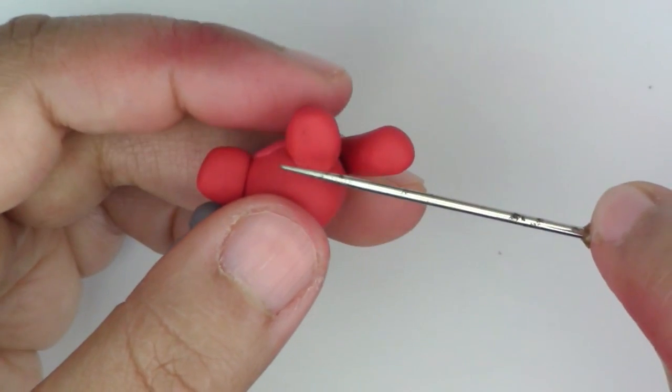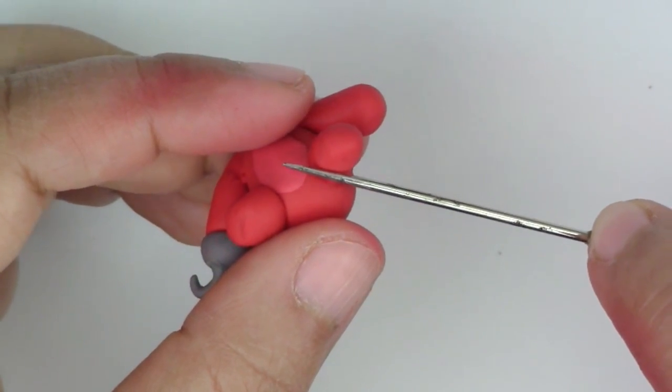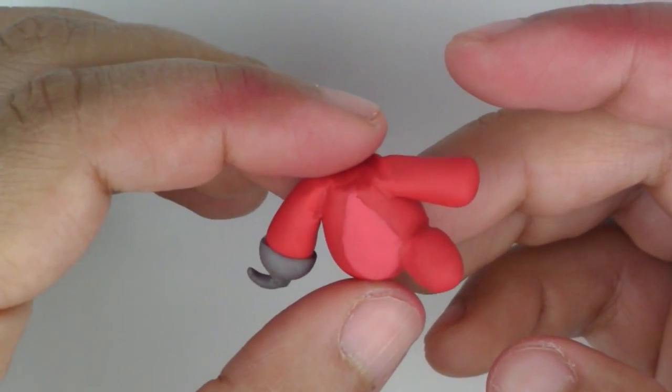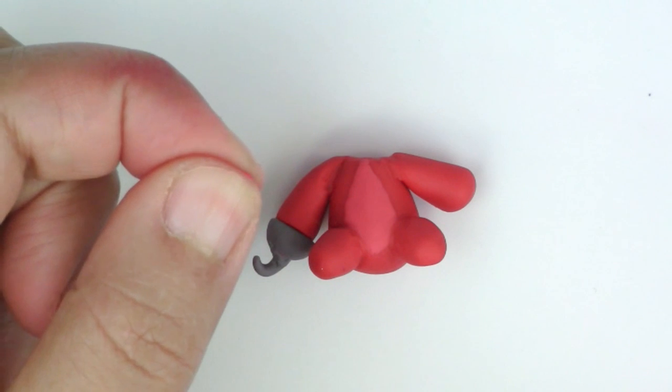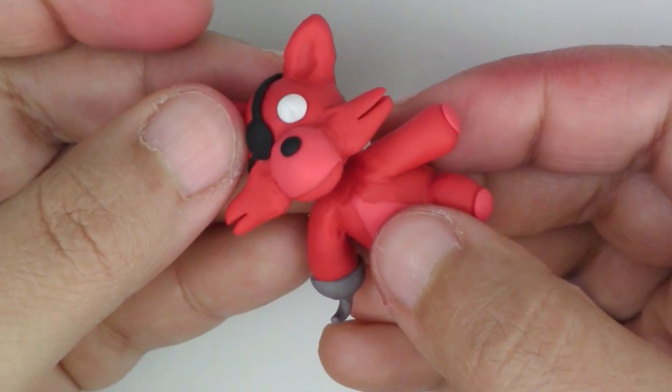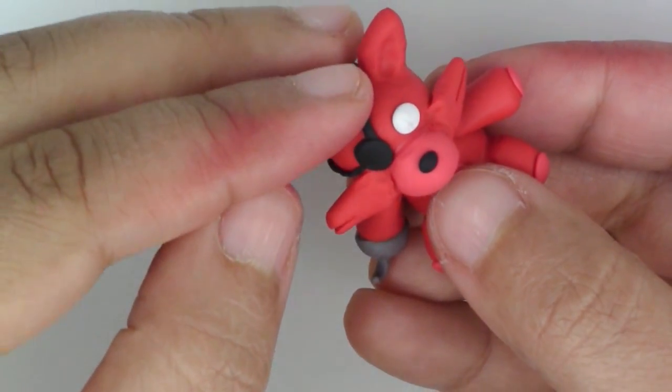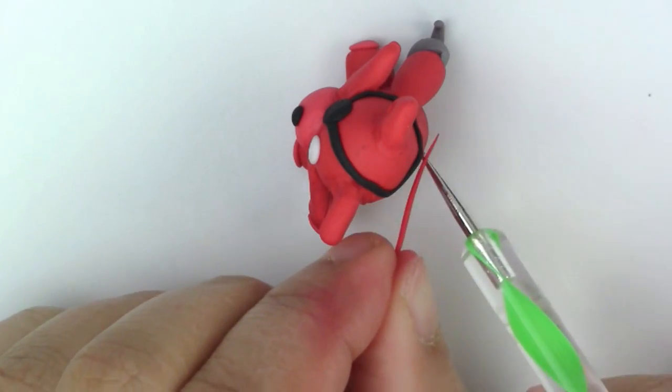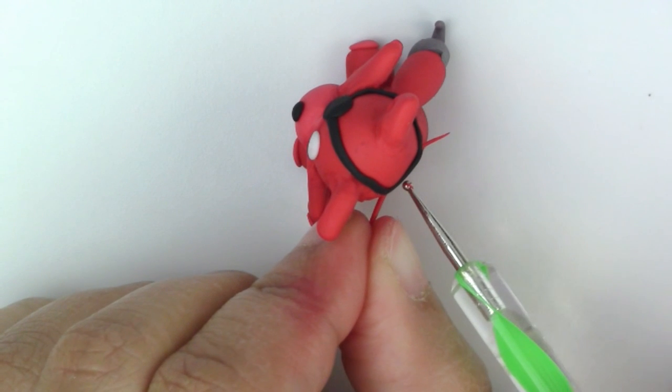For the legs, make two chubby snakes, and smooth them in at the bottom of the body. Add details with the lighter red, and now place the head on the body. Use some small strands of red to close the gap between the neck and the head, and to make the pieces stick more firmly together.